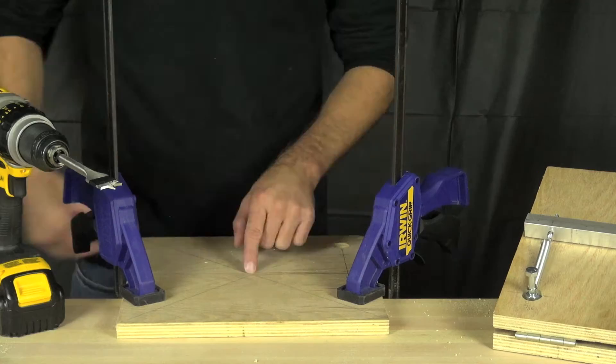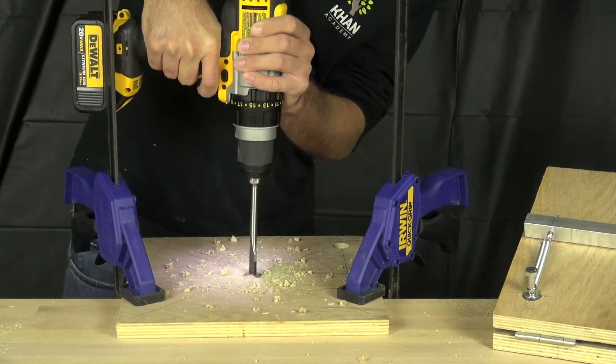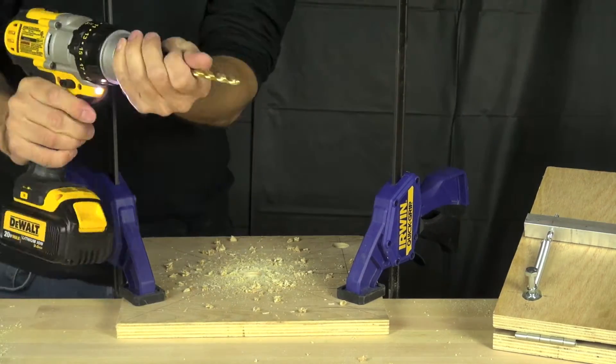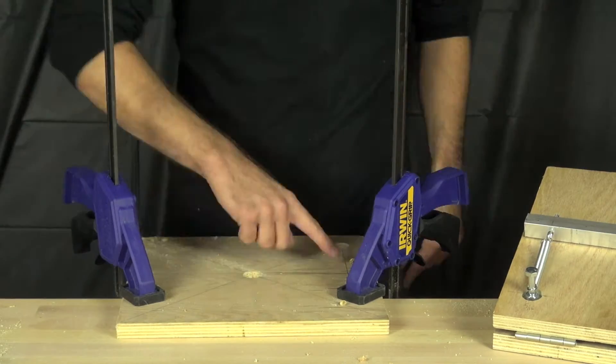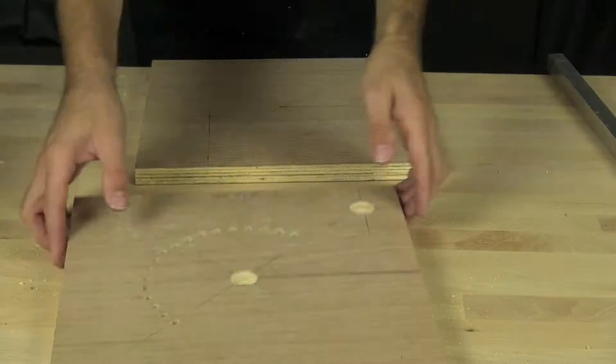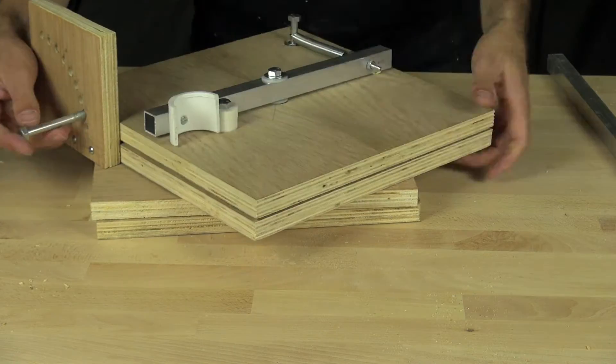Those holes cover a hundred and eighty degree arc and they're ten degrees apart. Now we're going to make the hole for the center. Again we're using our seven eighths inch spade bit. We're going to go down a quarter of an inch and then we're going to use our five sixteenths spiral bit to drill the hole the rest of the way.